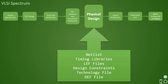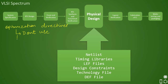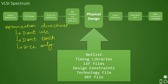Before we get started, there are some more inputs we want to briefly discuss. There is something called optimization directives, which are provided as input to the physical design team generally in the form of constraints. It contains a list of don't-use cells, which you don't want the tool to use in your design. Then there is a list of don't-touch cells — any cell already present in the design that you don't want the tool to touch or remove during optimization. There is also a list of size-only cells: the tool can only upsize or downsize these for optimization but cannot remove them.